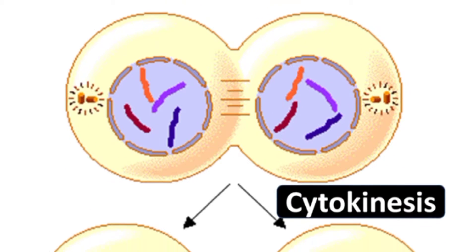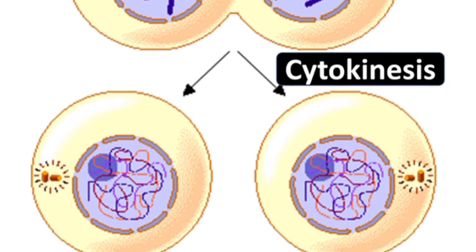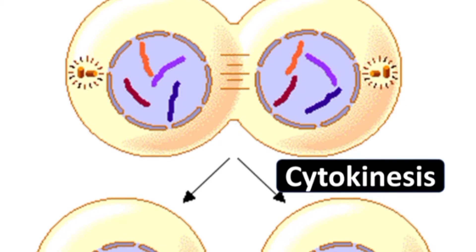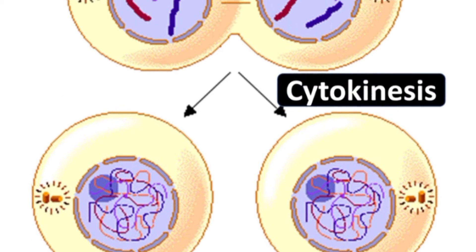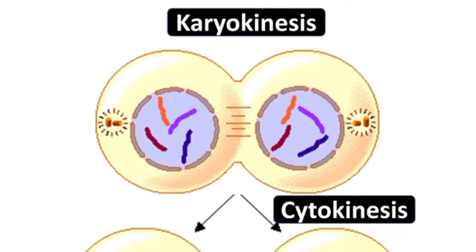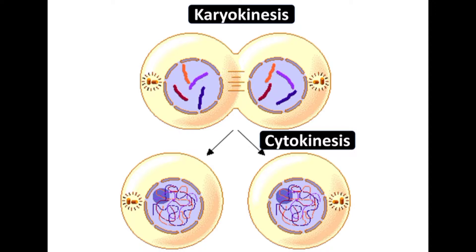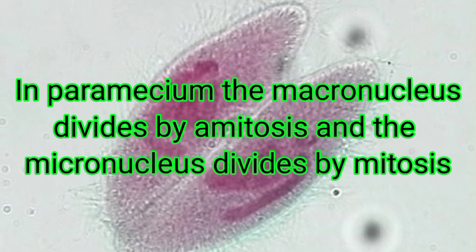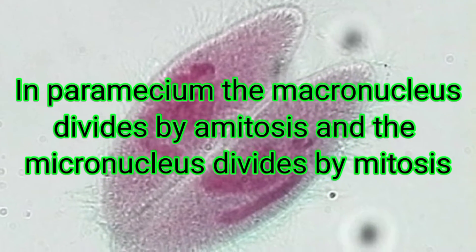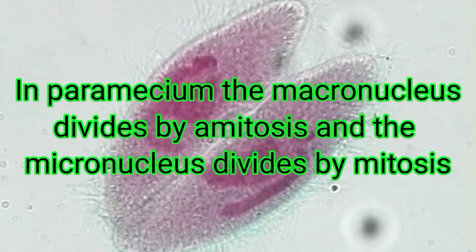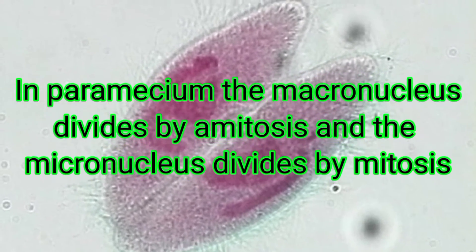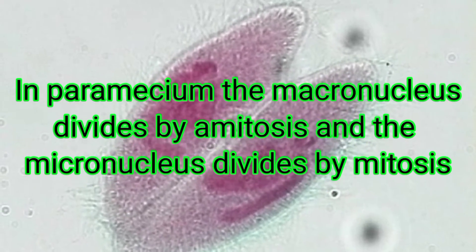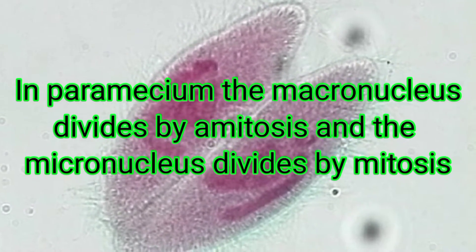In binary fission, the division of the nucleus is called karyokinesis and the division of the cytoplasm is called cytokinesis. In the case of Paramecium, there are two nuclei: the macronucleus and the micronucleus. The macronucleus divides by amitosis and the micronucleus divides by mitosis.